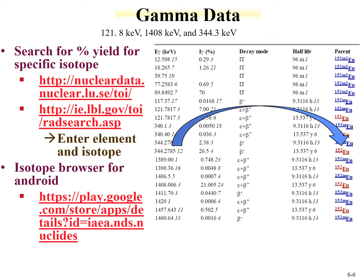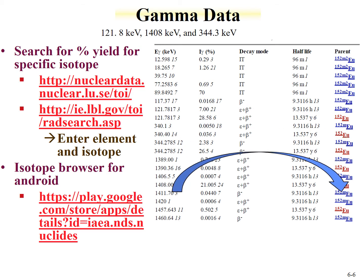These values are much easier to find this way. The table shown here is actually just a smaller version of the entire gamma data for europium-152. Compared to the table of the isotope data method, this is a much more straightforward approach to finding the percentages for gamma intensities.